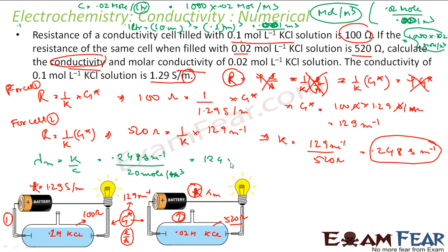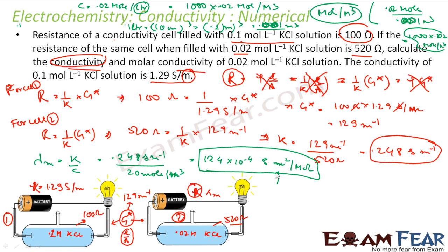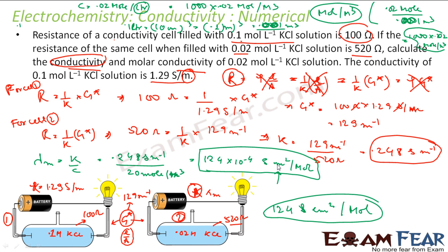Solving, you get 124 times 10 to the power minus 4 Siemens meter squared per mol. You can also find the same solution in centimeter units — you get 124 Siemens centimeter squared per mol. Since 1 meter equals 100 centimeter, replacing 1 m² with 10 to the power 4 cm², the 10⁴ and 10⁻⁴ cancel to give 124 S·cm²/mol.